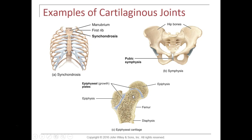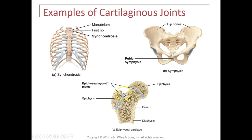Another example of a synchondrosis is the epiphyseal plate. It's not a true joint, but it is a pad of hyaline cartilage adjoining two parts of a bone. We only see the epiphyseal plate in growing children. As an adult, it turns into bone — we say it ossifies over — and becomes what we call a synostosis, a bony joint, visible as the epiphyseal line in adult bone.